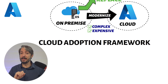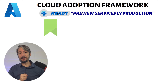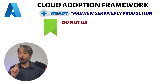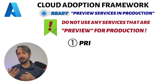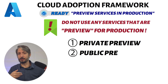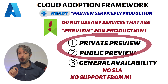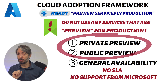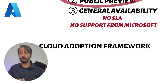Moving on to the ready pillar of the Cloud Adoption Framework. The first anti-pattern there is called preview services in production — this is self-explanatory. Do not use any services that are in preview for production. There are different preview stages that Microsoft offers for Azure services, indicating how close they are to being production ready. However, there is no SLA, no support, and no finalized cost from Microsoft for preview services. So avoid them for anything except testing environments and evaluating how the services work.